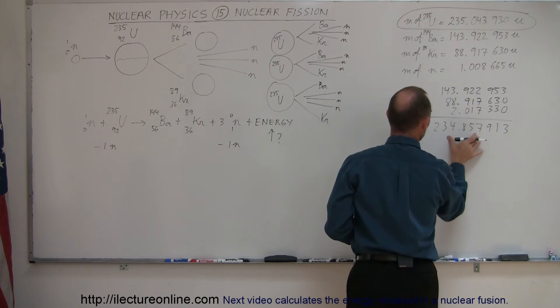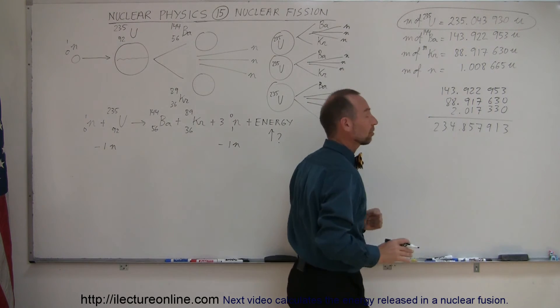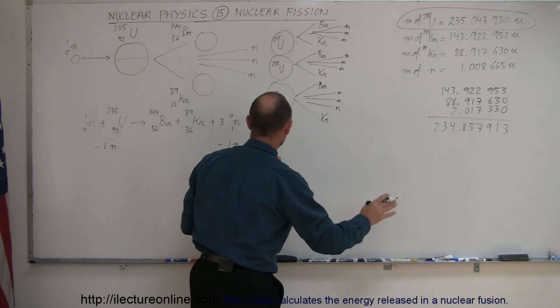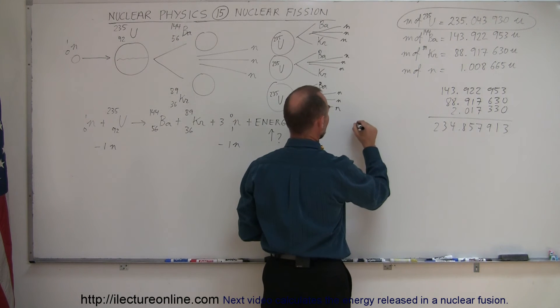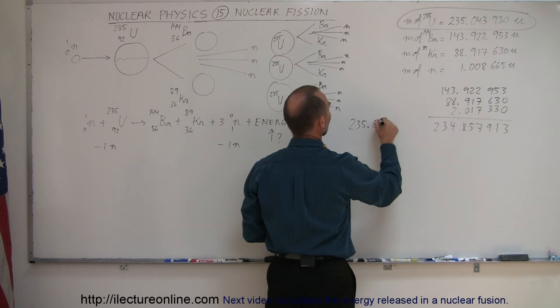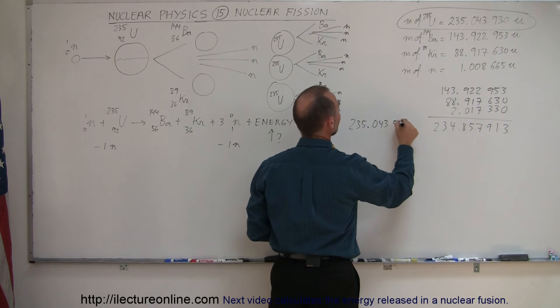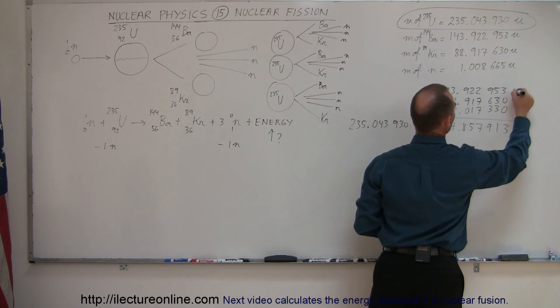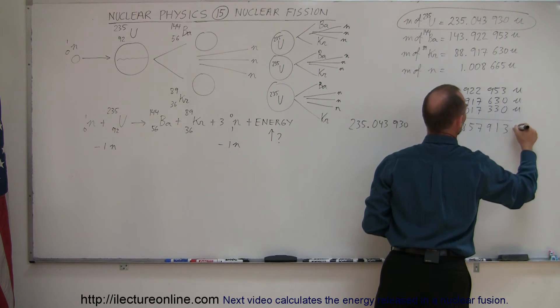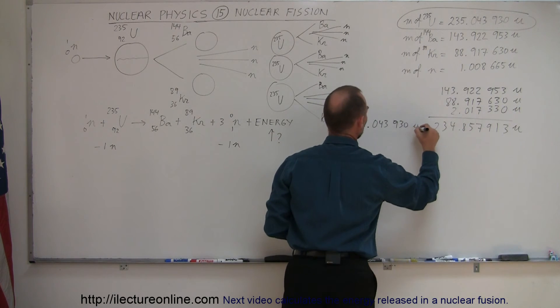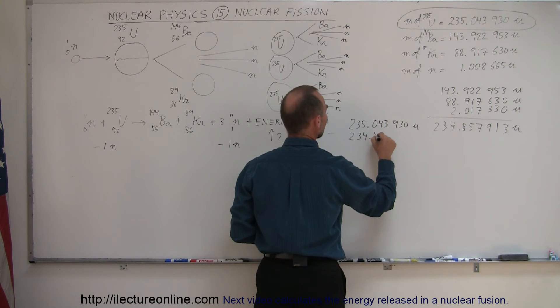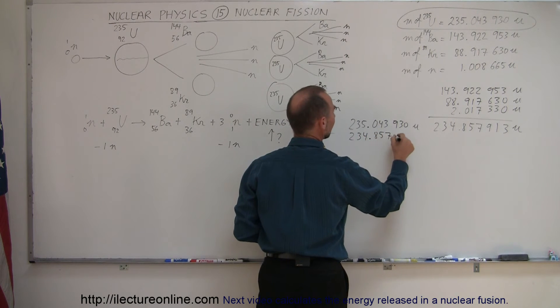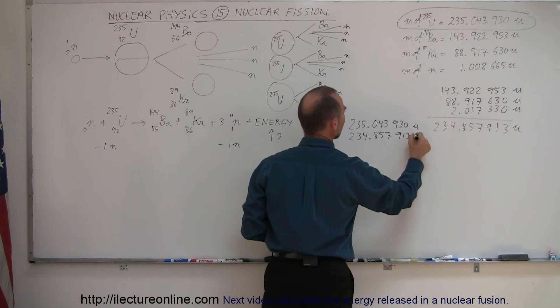So, if we now subtract this number, which is the mass of the daughter products on the right side of the reaction, from the original, and I guess I don't have the original written down, so let's write it down. We have 235.043930 atomic mass units and subtract from that the resulting mass, 234.857913 atomic mass units.